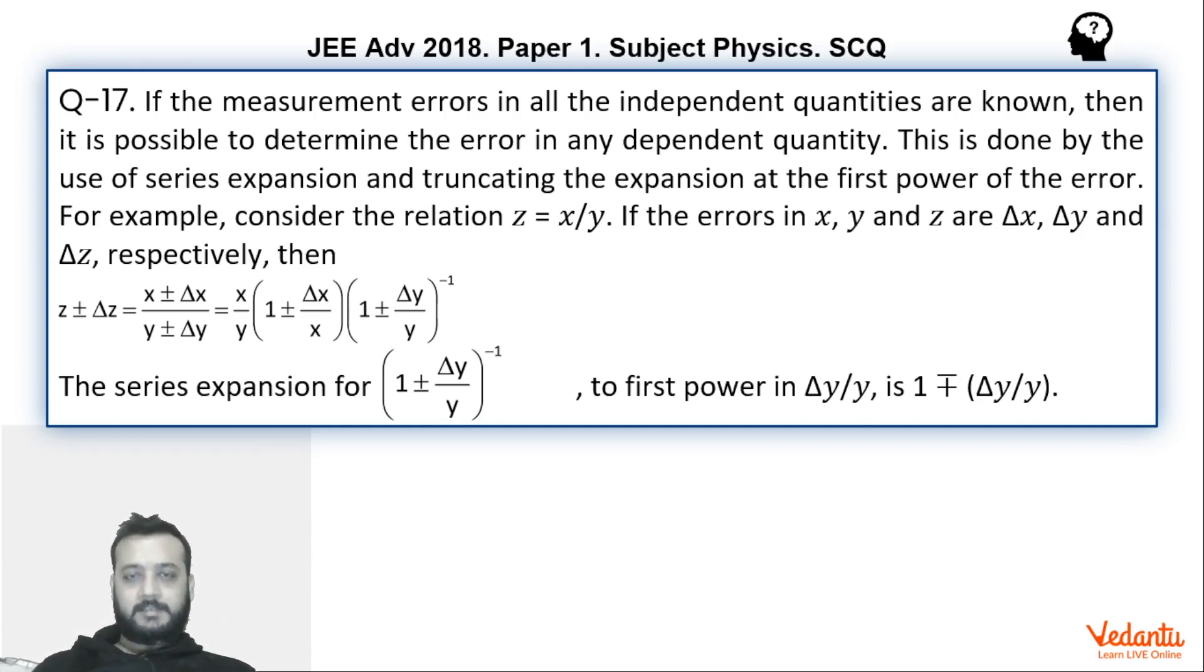This question is from the topic of errors and in my opinion most students would have done this without much problem. The question is paragraph based, from which two questions were asked, and right now we are doing the first question. In the paragraph you have been given the same theory that you are taught in class. If you read this paragraph, you will realize that the error theory taught in class is the same theory given here.